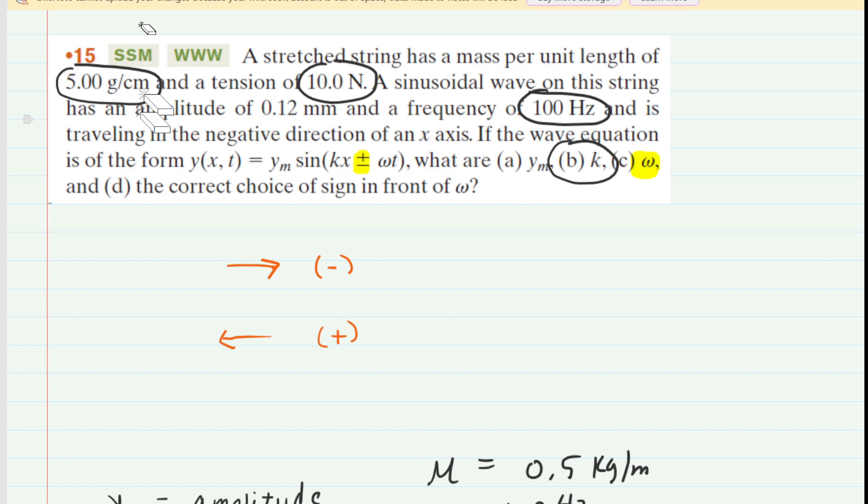And this question, if we kind of clean things up a little bit here, did state that the wave is traveling in the negative direction of an x-axis. So in other words, it's traveling to the left, and therefore we're going to choose a positive sign in front of ω. So positive would be the correct answer for part D.